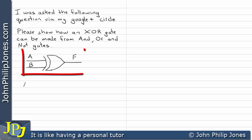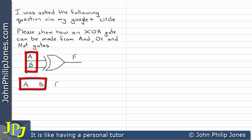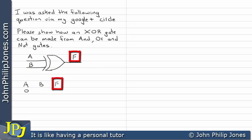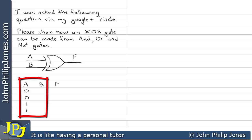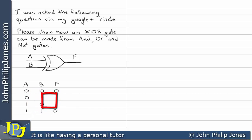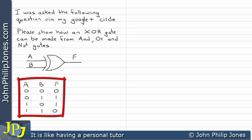Here you can see the symbol for a two-input exclusive OR gate. It has inputs A and B and output F. I'm going to complete all combinations for A and B. We know that the output is zero when A and B are the same, and one when A and B are different. This is the truth table for an exclusive OR gate — it defines the function of the exclusive OR gate.